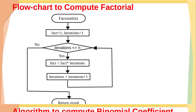This is the flowchart to compute the factorial function of n. Initially, we set fact equal to 1 and number of iterations equal to 1. Then we check whether number of iterations is less than or equal to n. If true, fact becomes fact multiplied by number of iterations, iterations is incremented by 1, and the loop repeats. Once iterations exceed n, we return the result.